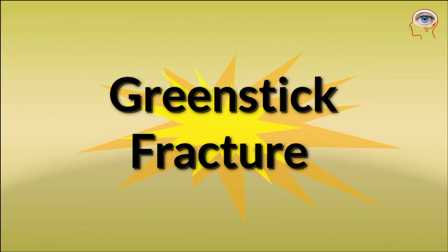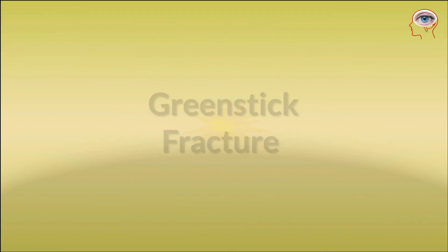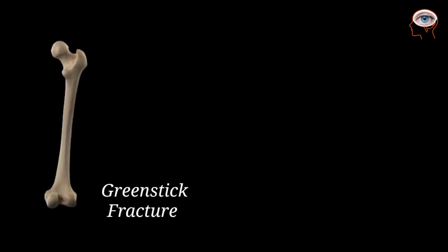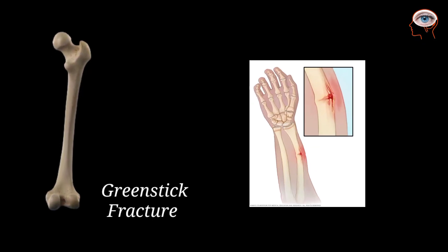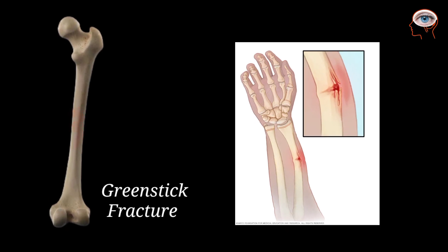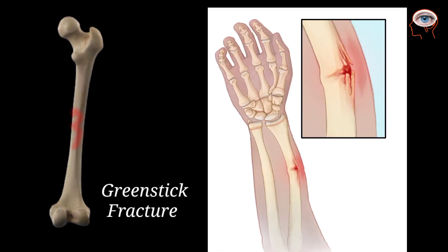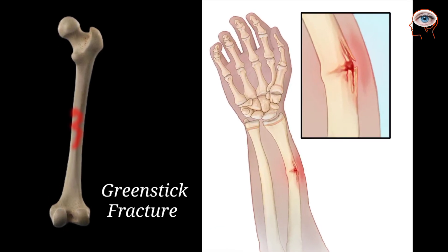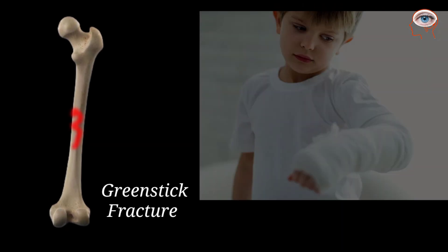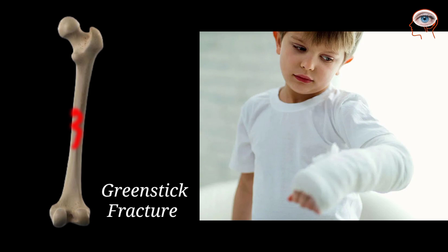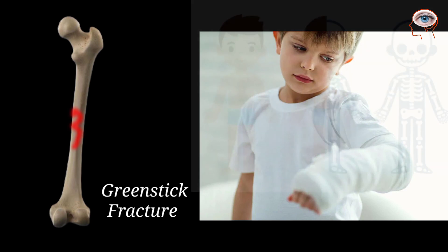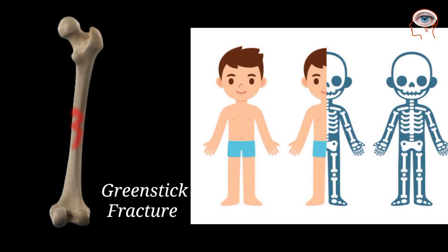Next is greenstick fracture. In this fracture, the bone bends and breaks but does not separate. This partial fracture mostly happens in children because their bones are softer and more flexible.